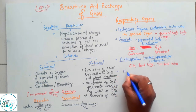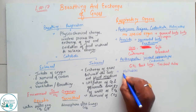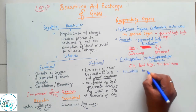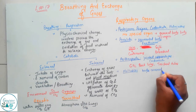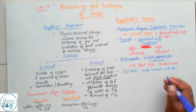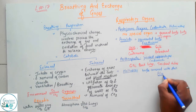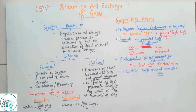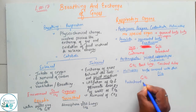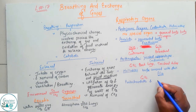Now we come to Mollusca. Mollusca — whose main characteristic is that the body is covered with a shell. An example is Pila. If we talk about the respiratory organ of Mollusca, they respire through the gills.